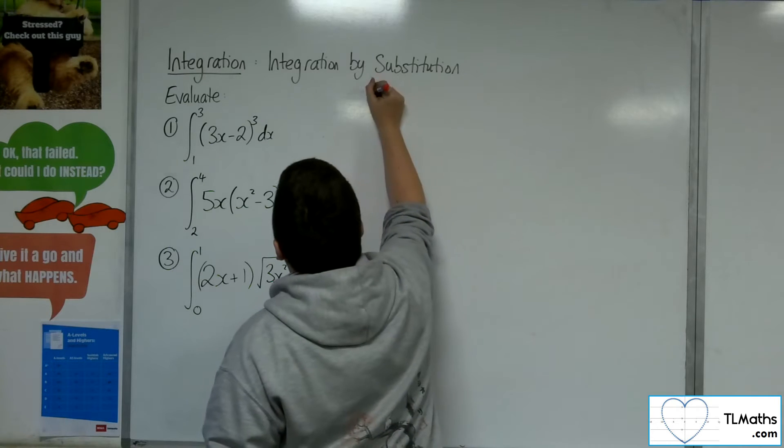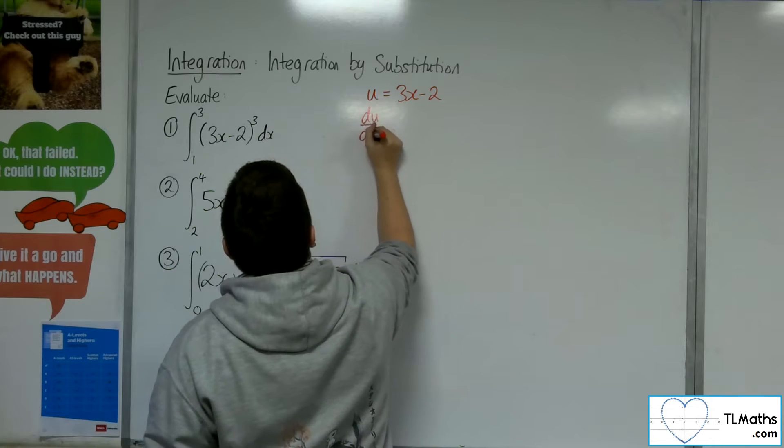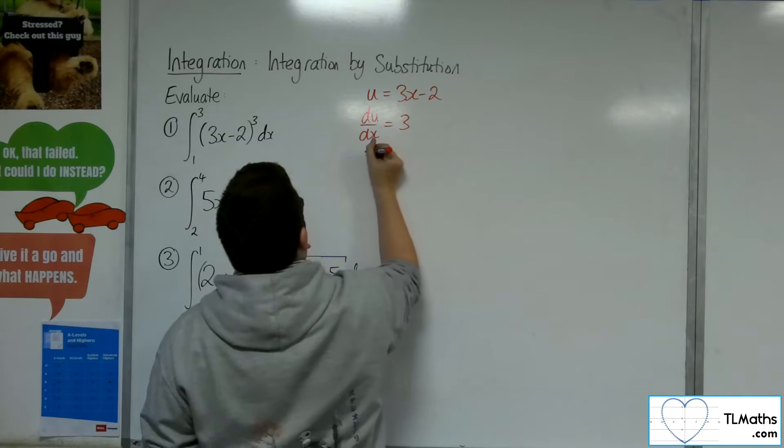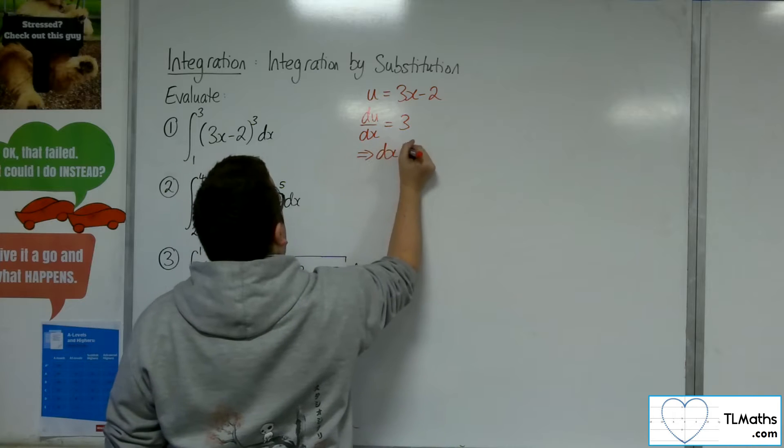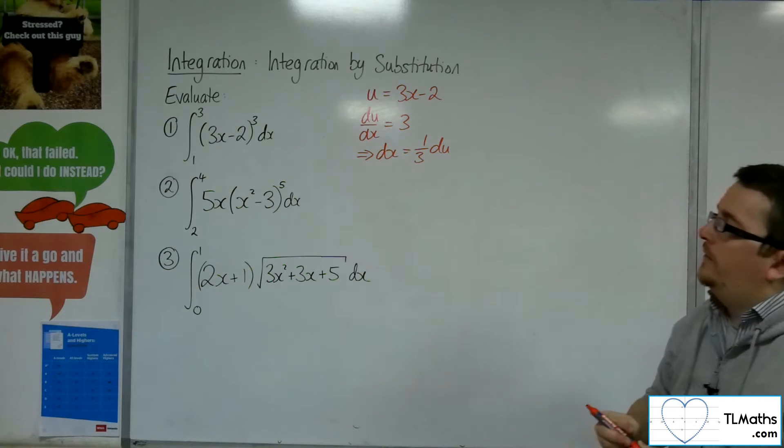So the u, the substitution, will be the 3x minus 2. So we first of all differentiate that, so du by dx is 3, and rearrange it to get dx is equal to 1 third du. We've got that piece.